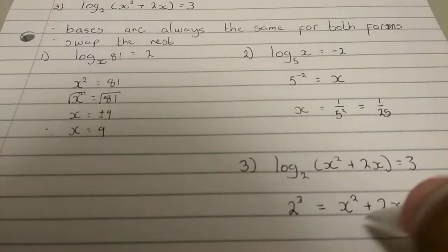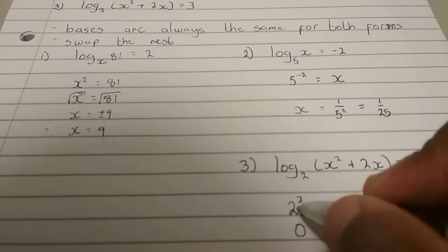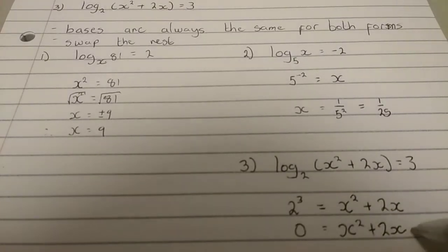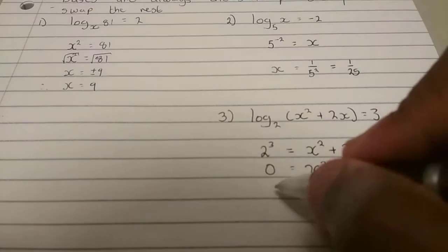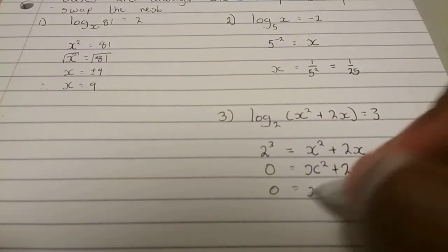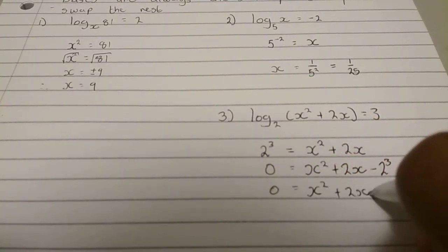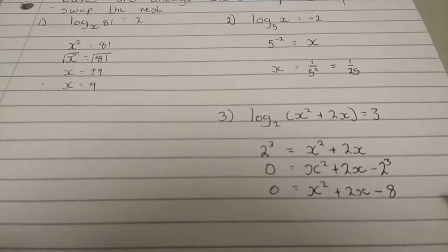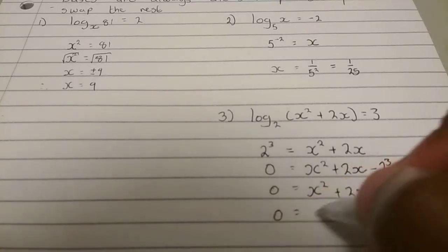Now all we're going to do is that we're taking this to the other side such that we'll have x squared plus 2x minus 2 to the power 3. Now this we can rewrite very quickly as x squared plus 2x minus, that's 2 to the power 3 is 8.